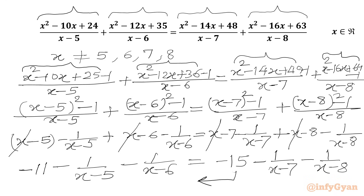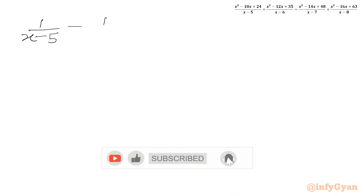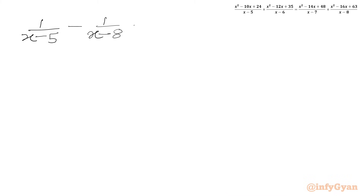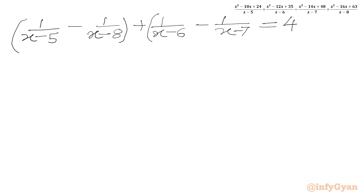We rearrange by taking -15 to the LHS and the two fraction terms to the RHS. So on the LHS we have 15 - 11 = 4, and we write 1/(x-5) - 1/(x-8) plus 1/(x-6) - 1/(x-7) equal to 4.